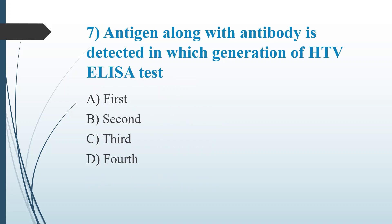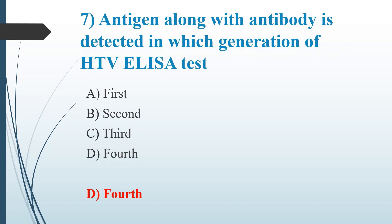Seventh question: Antigen along with antibody is detected in which generation of HIV ELISA tests? Option A: first generation. Option B: second generation. Option C: third generation. Option D: fourth generation. The answer is Option D, fourth generation.